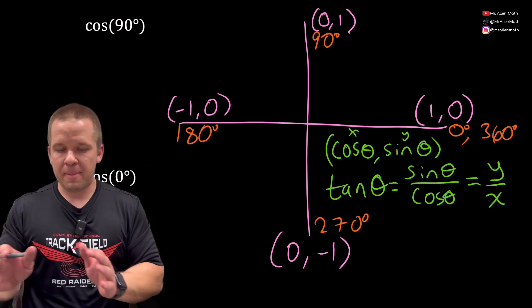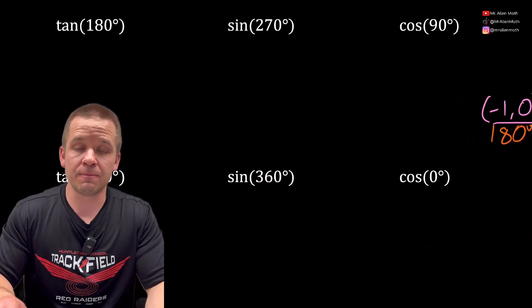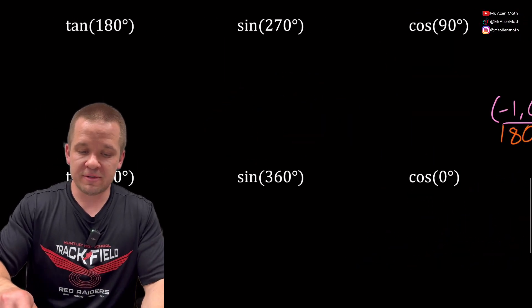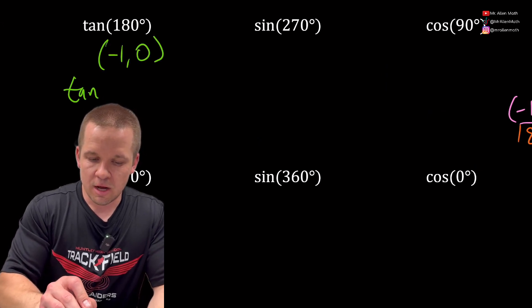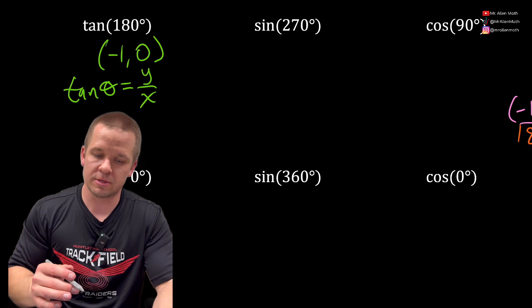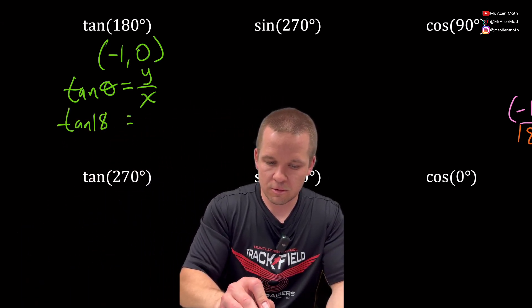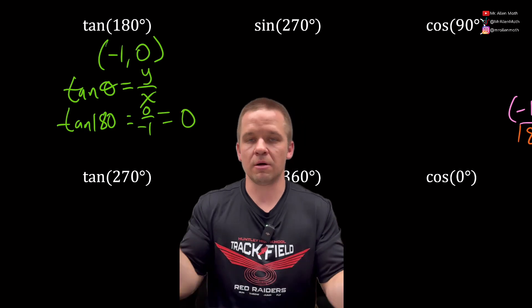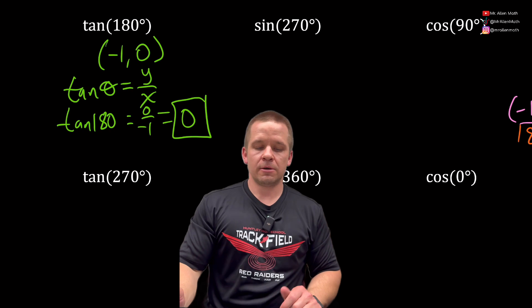So we'll pop back and forth to this thing if needed. First one here, we've got tangent of 180. So what's my coordinate at 180? It's (-1,0) right there. Tangent of theta equals y over x. So tangent of 180 equals zero over negative one. What's zero divided by negative one? It's just zero. First one done.